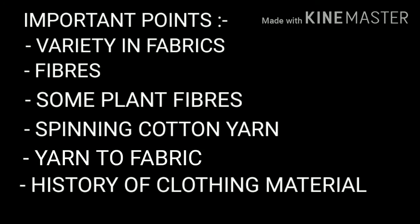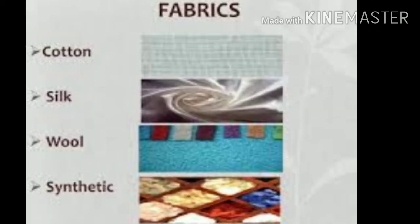This chapter contains some important points. Number 1: Variety in Fabric. Number 2: Fiber. Number 3: Some Plant Fibers. Number 4: Spinning Cotton Yarn. Number 5: Yarn to Fabric. Number 6: History of Clothing Material.